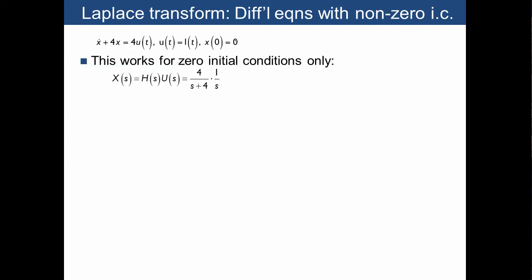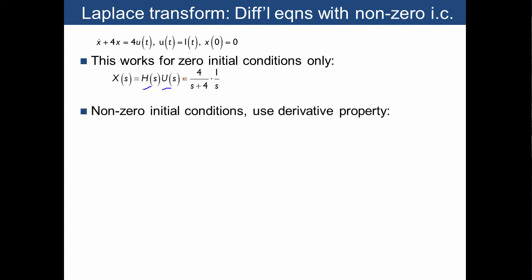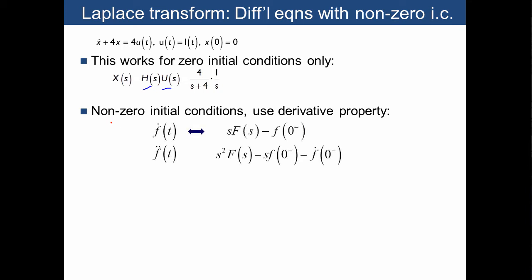The derivative property is especially useful for solving differential equations with non-zero initial conditions. We've already used the multiplication of the transfer function against the input, but things are different with non-zero initial conditions — you have to use the derivative property. The property states that given a function f(t), if you need the transform of its derivative, you multiply the transform of the function itself and then subtract its initial condition.